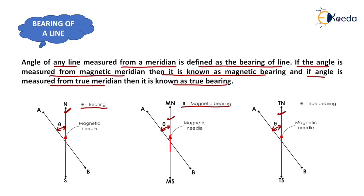So that is all about the bearing of a line. If we measure the angle from the magnetic meridian, it will be magnetic bearing, and if we measure the angle from the true meridian, it will be true bearing. That is all about the types of bearing. Thank you very much, students.